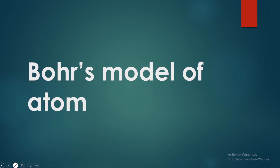What is the Bohr model of the atom? Rutherford atom model — we discussed the three drawbacks in the previous class. It could not explain the stability of the atom. Different lines of the hydrogen spectrum were discussed in the class, and those lines were not explained by Rutherford's model.